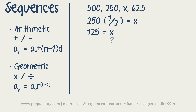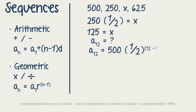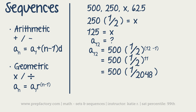If they ask for the 12th term instead, use the formula. One important note: d and r are always expressed as addition or multiplication, so if you're dividing by 2, write it as multiplying by one-half. Plugging in: a_12 = 500 · (1/2)^(12 − 1) = 500 · (1/2)^11 = 500 · (1/2048) ≈ 0.244.